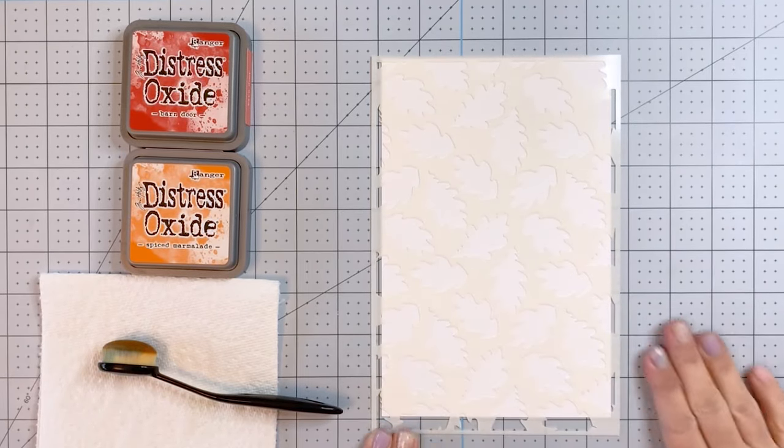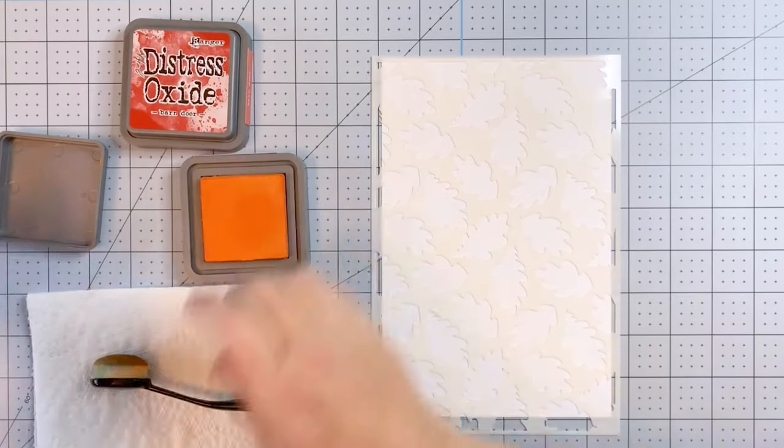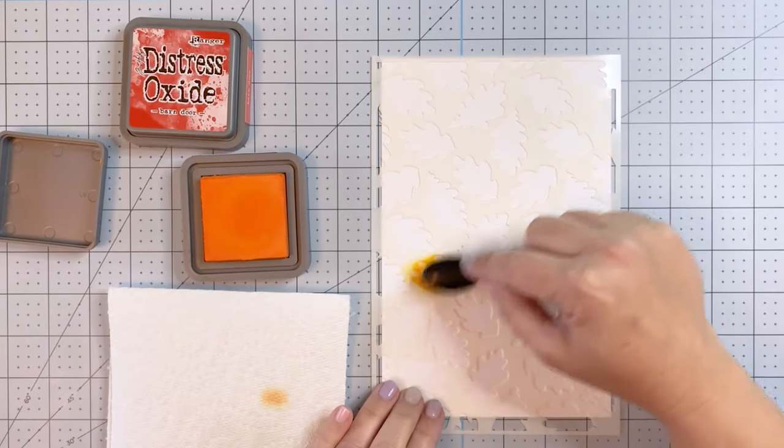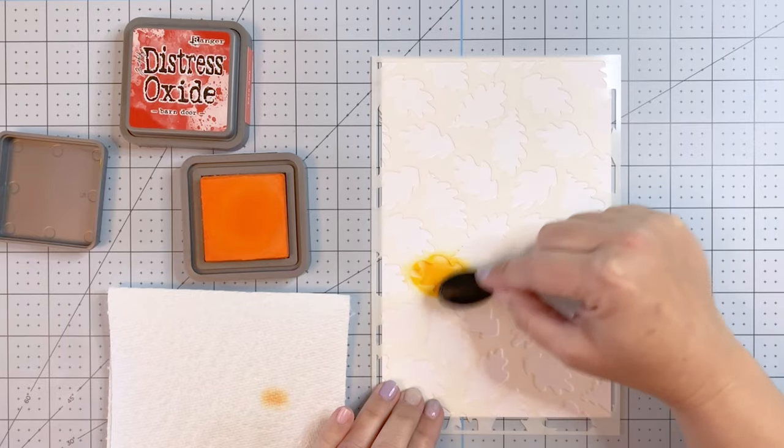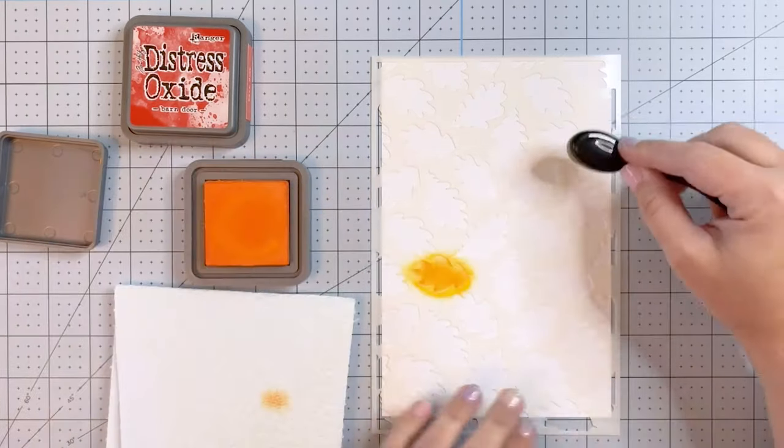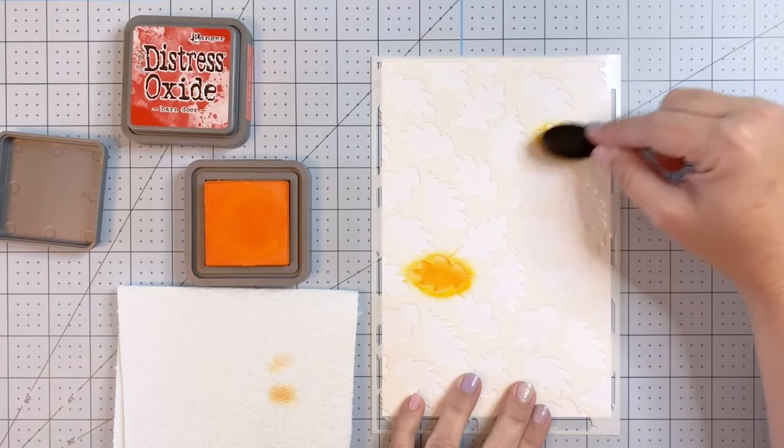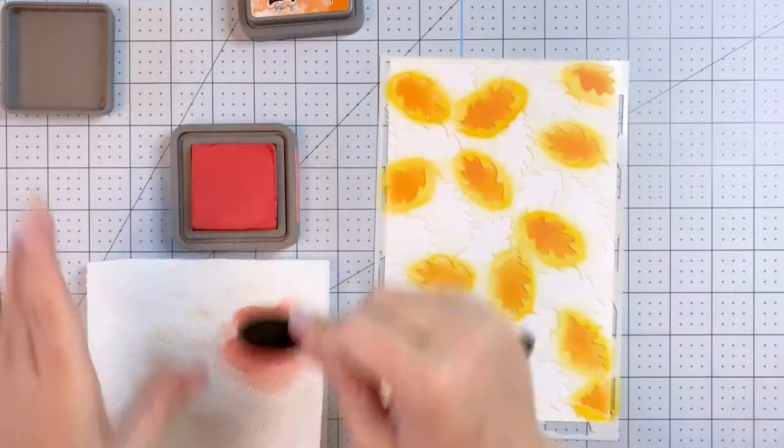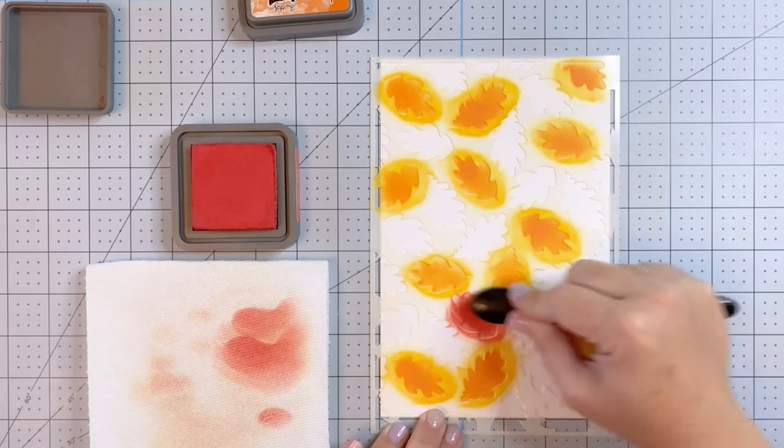I'm coming in here with some distress oxide colors. I've got an orange and a red, some really pretty fall colors. I'm going to go around on the stencil here and there, doing some in orange, and then I'm going to go back in and do some in the red.